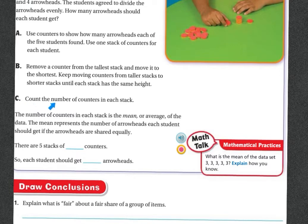Then in C, count the numbers of counters in each stack so you'll have it even. The number of counters in each stack is the mean or the average of the data. The mean represents the number of arrowheads each student should get if the arrowheads are shared equally.